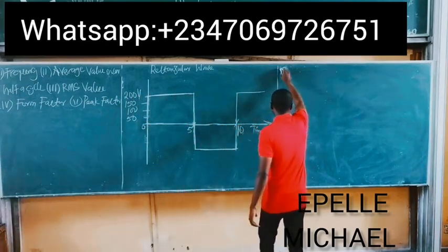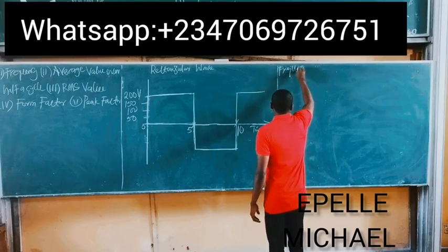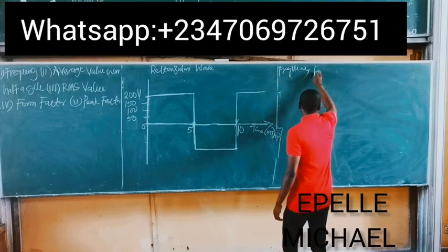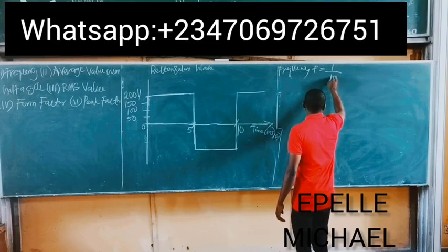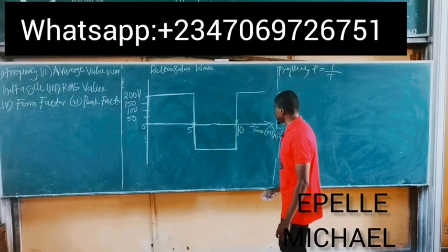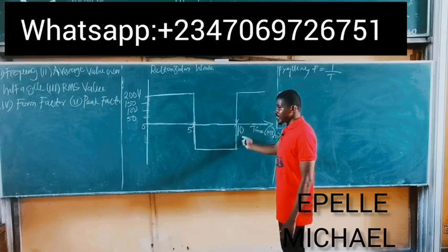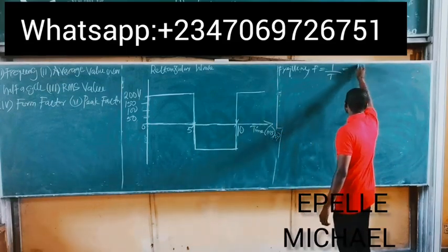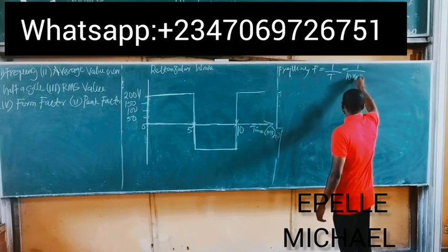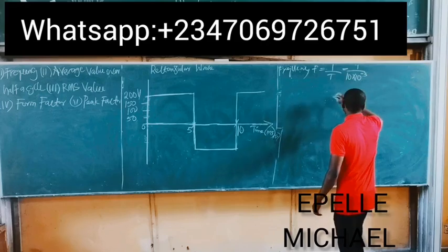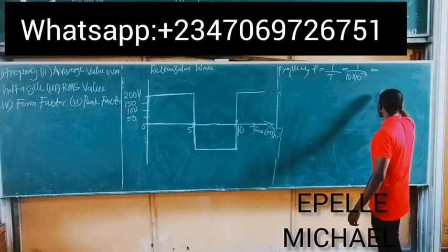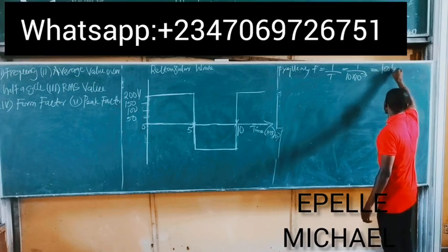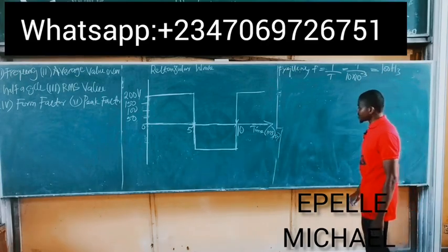So already we know that frequency f is simply 1 over period and the period here, the maximum period here is 10 and it is measured in milliseconds. So that is simply 1 over 10 milliseconds times 10 to the power of minus 3 and this gives us 100 hertz.